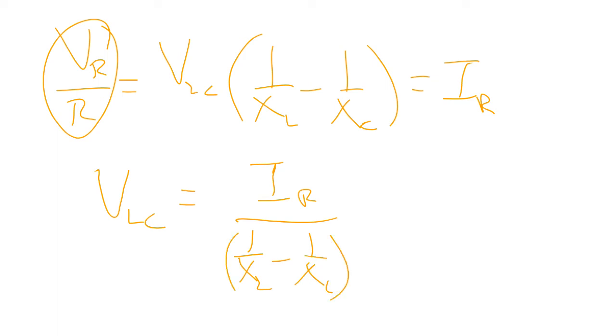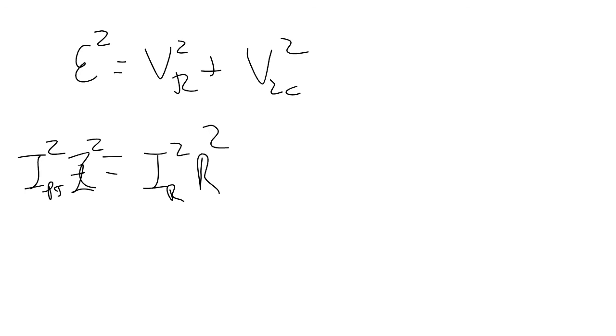So now let's go back to, so keep that in mind. So I'll go back to Epsilon squared is equal to VR squared plus VLC squared. And that's equal to I squared. So this is actually I power supply squared. Z sub C squared is equal to I squared across the resistor times the resistance squared plus I squared over 1 over X sub L minus 1 over X sub C squared.